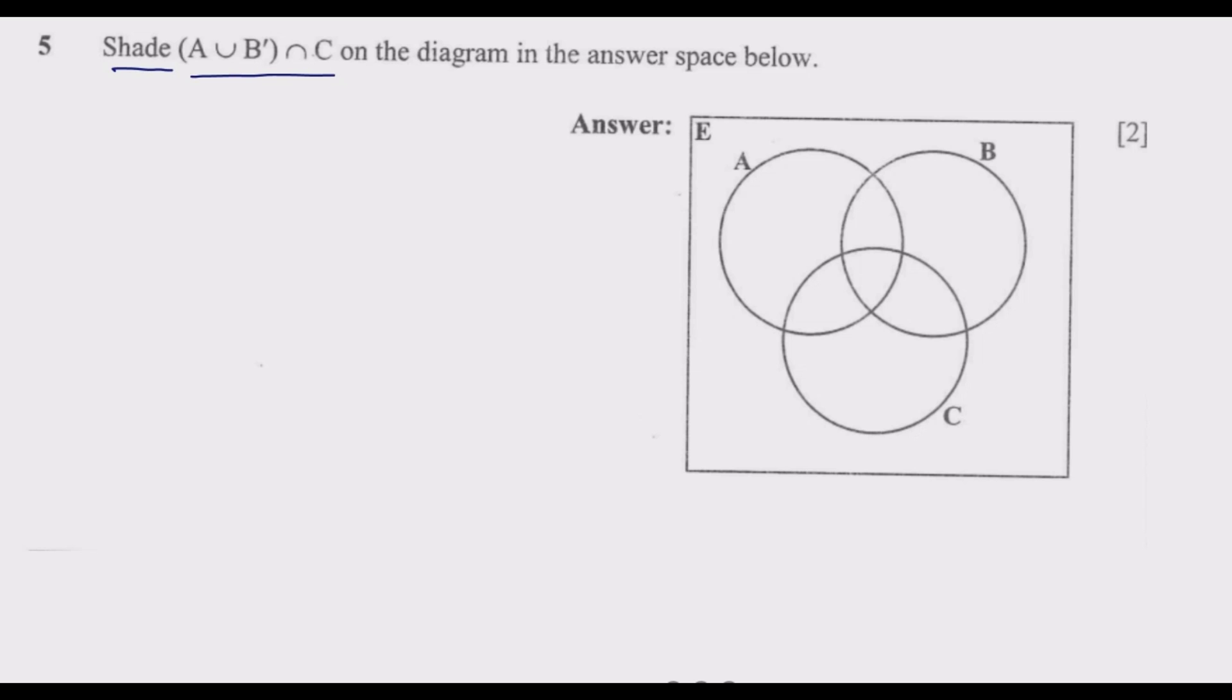Union means combining, then complement means what is not in that set, then intersection means what is common in the two sets or three sets that you are comparing.